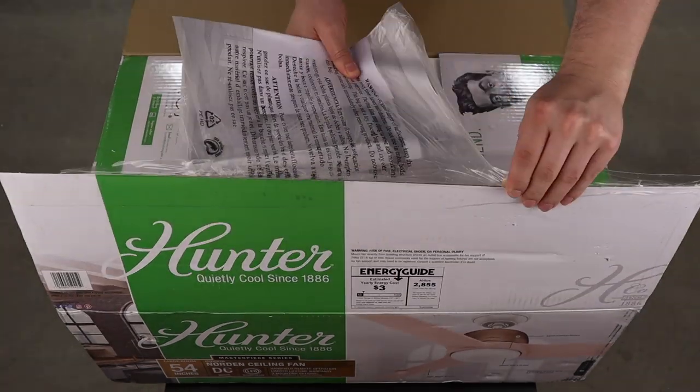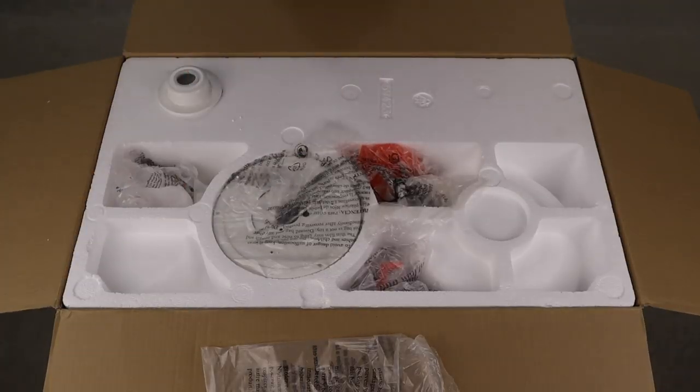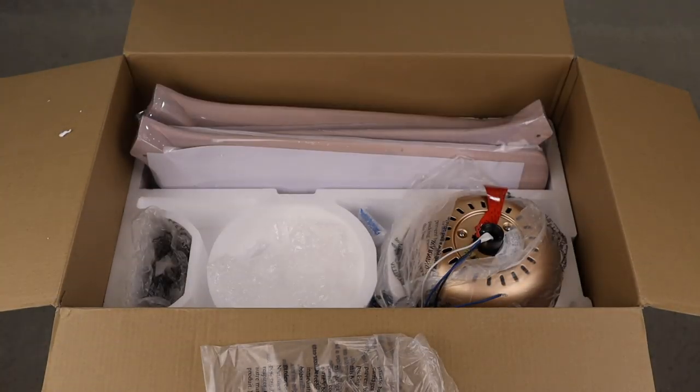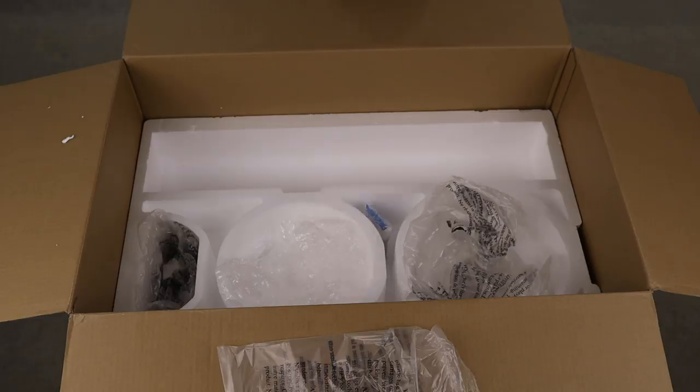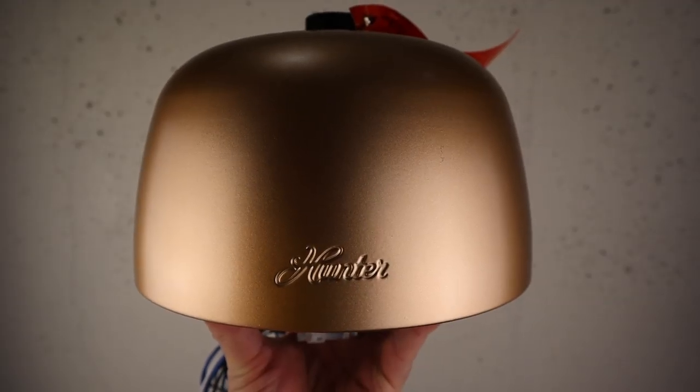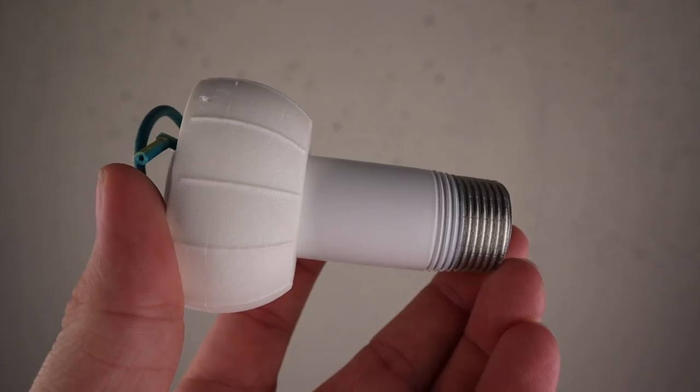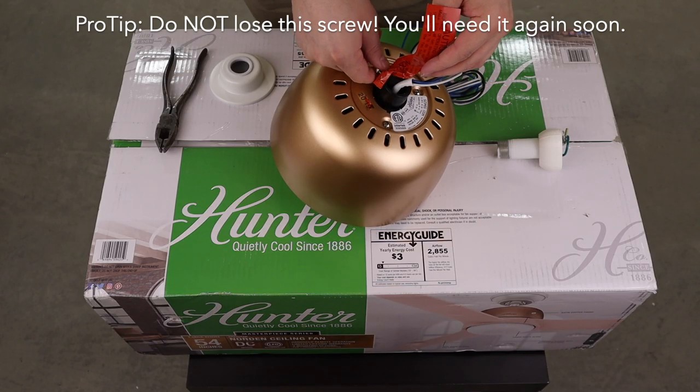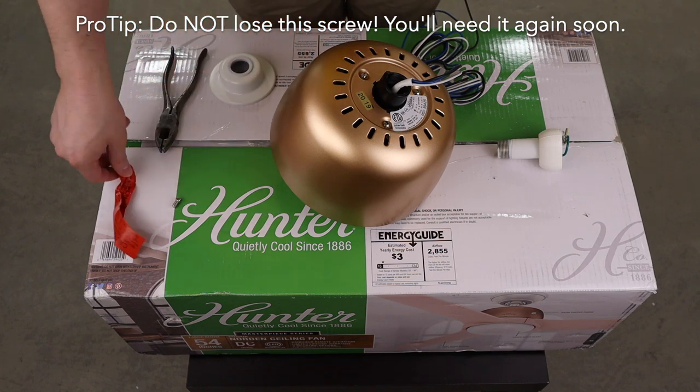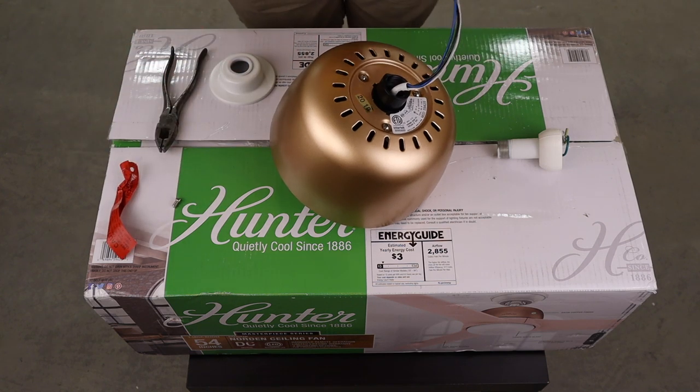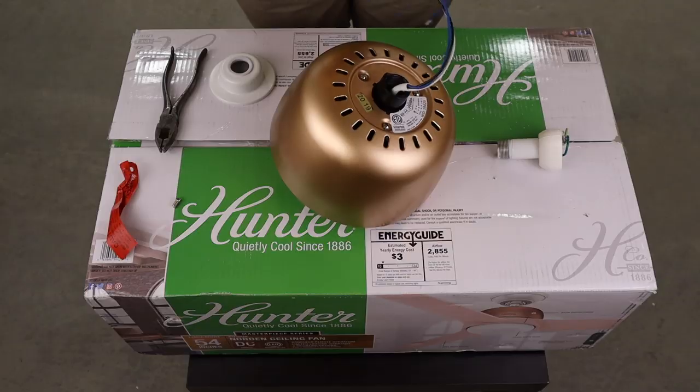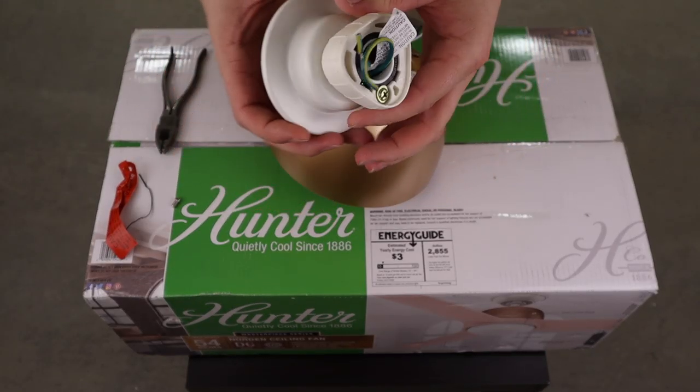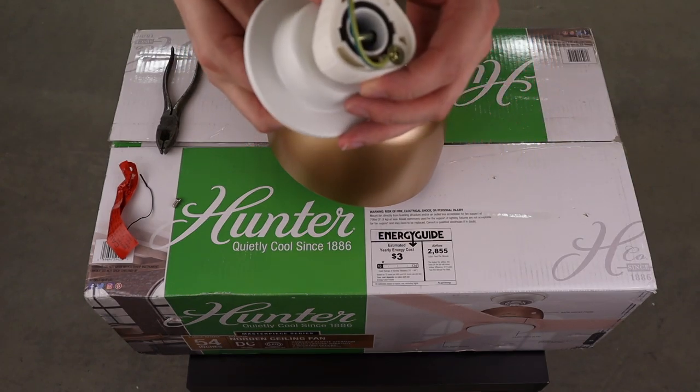Locate the motor assembly, preferred down rod length with ball installed, and adapter cover. Remove the pre-installed set screw from the motor adapter and discard the label. Unbundle the wiring, making it as straight as possible. Slide the adapter cover onto the down rod until it rests against the hanger ball. Gather the wiring and pass it through the threaded end of the down rod.